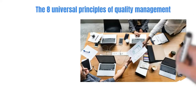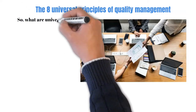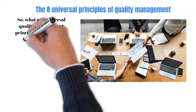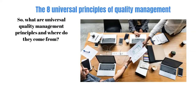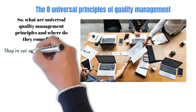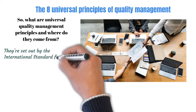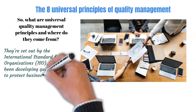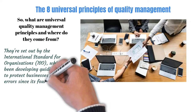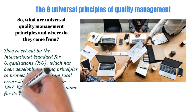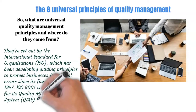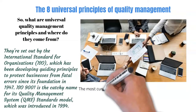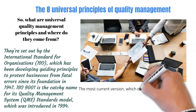So what are the universal quality management principles and where did they come from? They're set out by the international standards organization called ISO, which has been developing guideline principles to protect businesses from fatal errors since its foundations in 1947. ISO 9001 is the applicable name for the quality management system, QMS standards model, which was introduced in 1994.